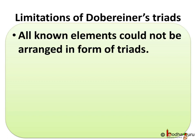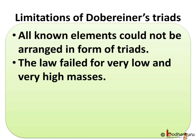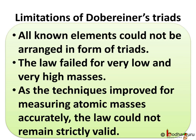Döbereiner only managed to find 3 such triads based on similarities in properties. Thus, there were limitations to this. First of all, all known elements could not be arranged in the form of triads. Secondly, the law failed for very low and very high masses. Lastly, as the techniques improved for measuring atomic masses accurately, the law could not remain strictly valid.